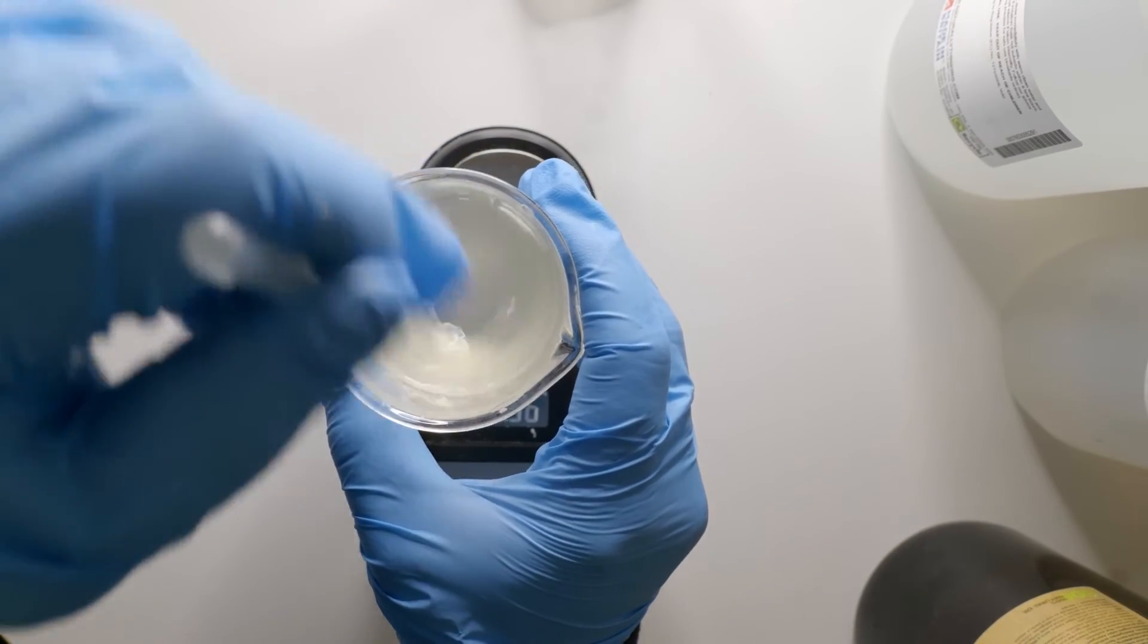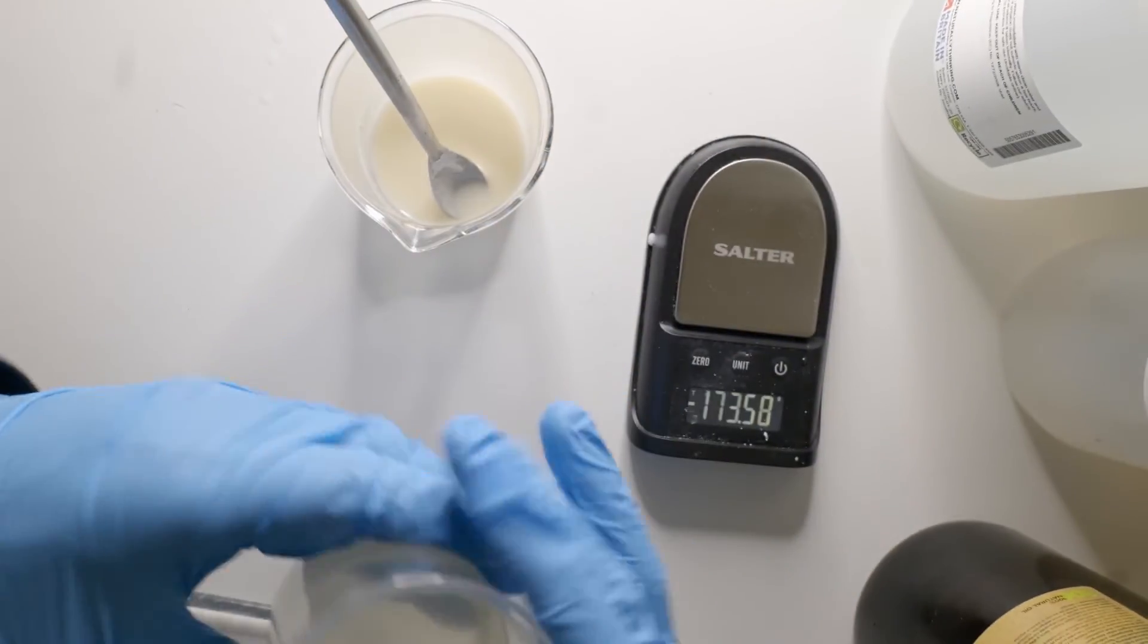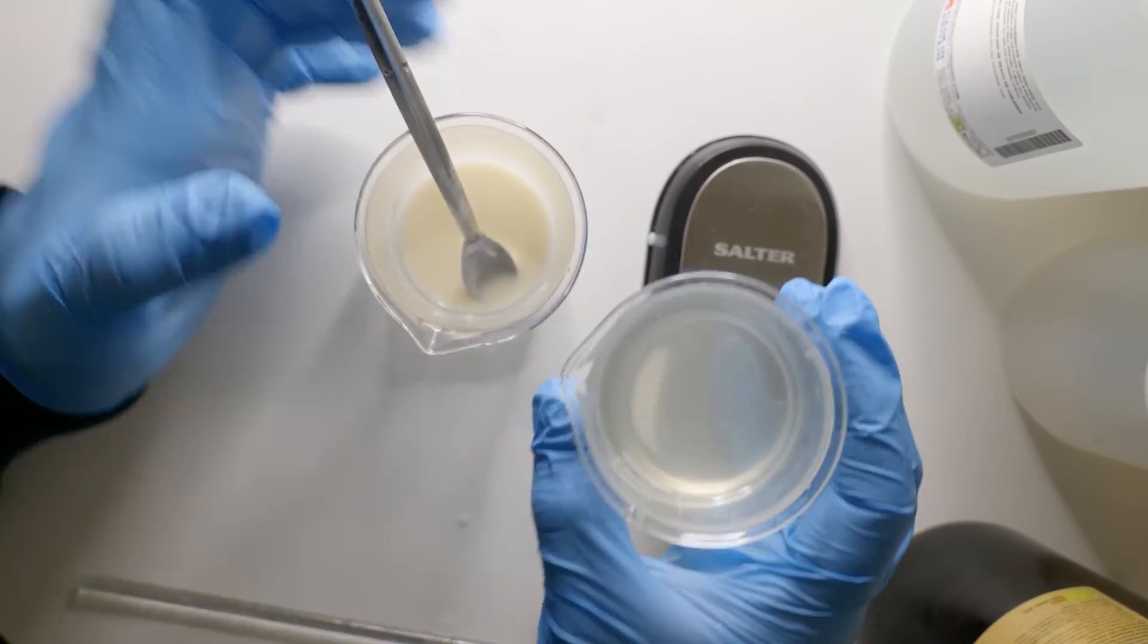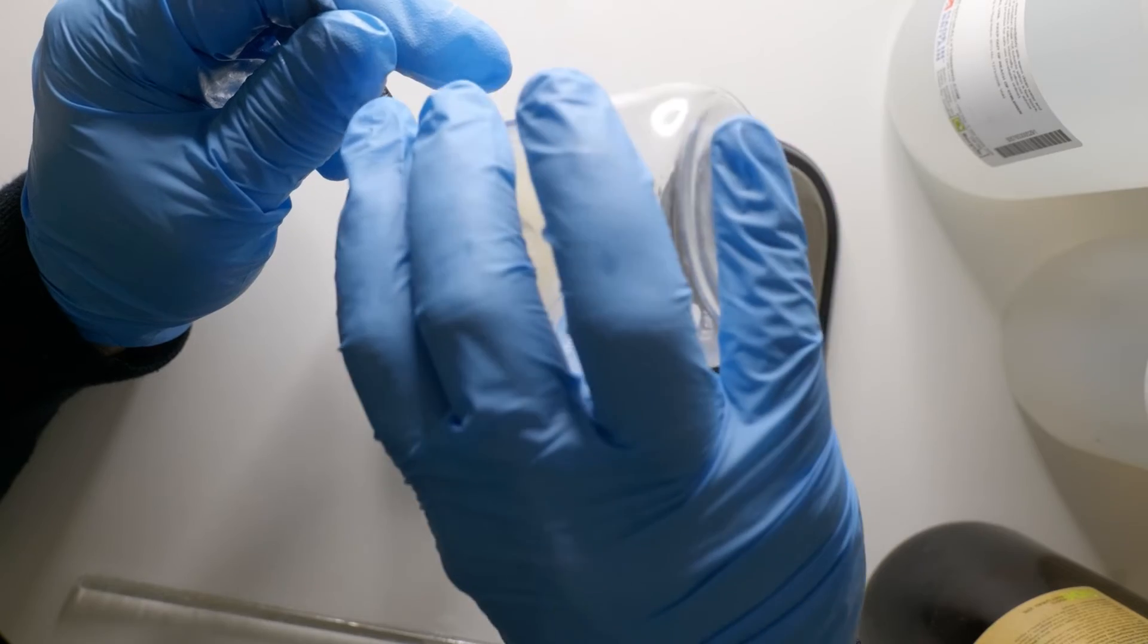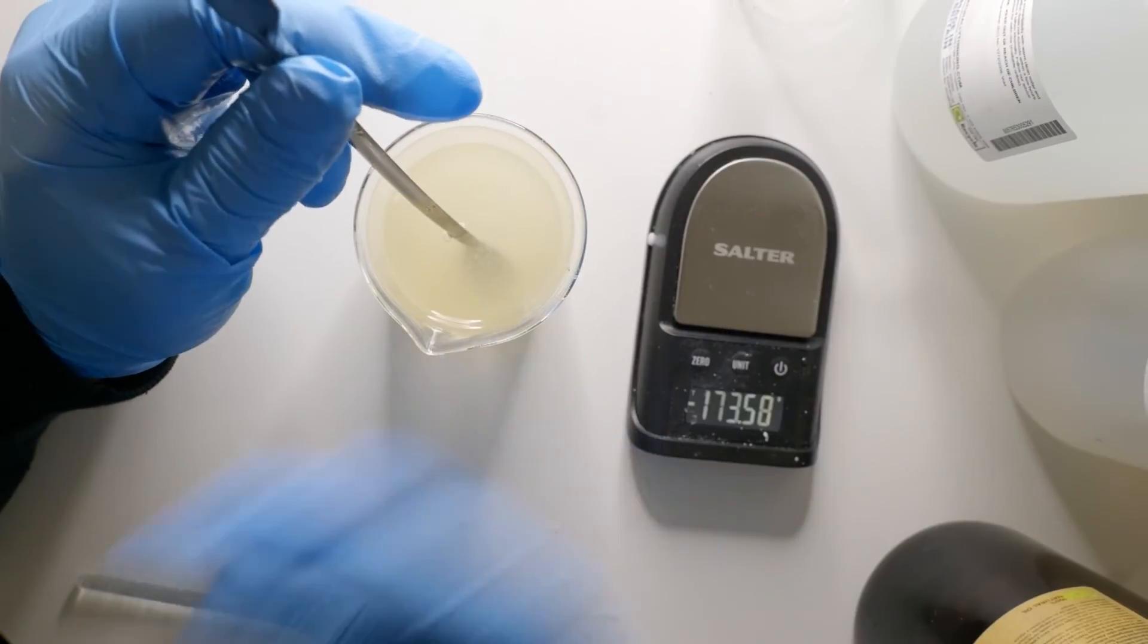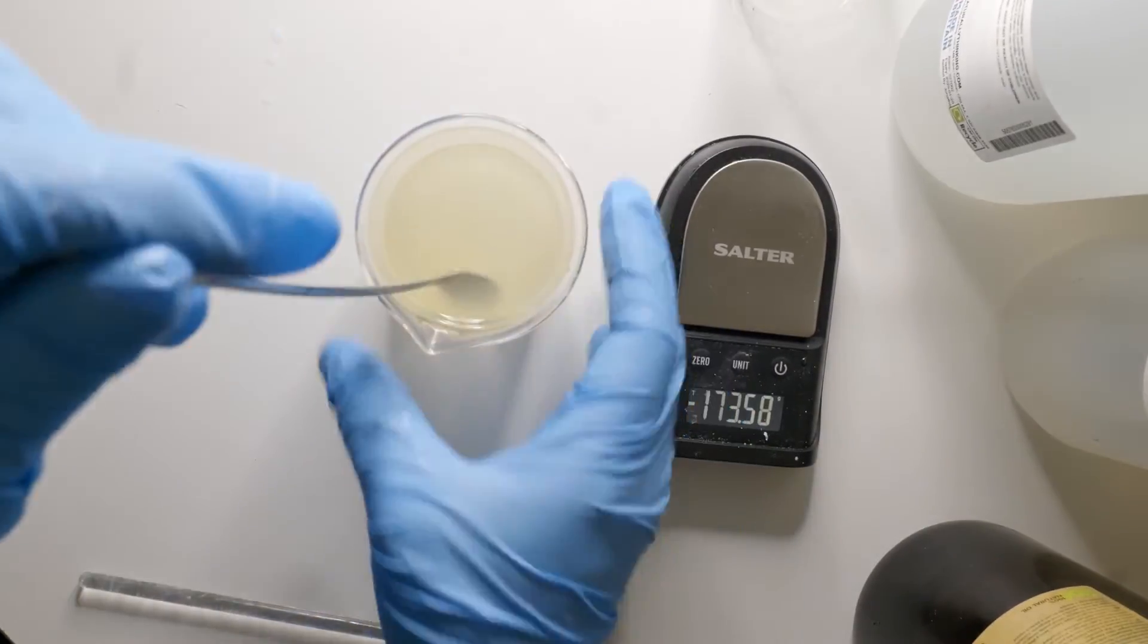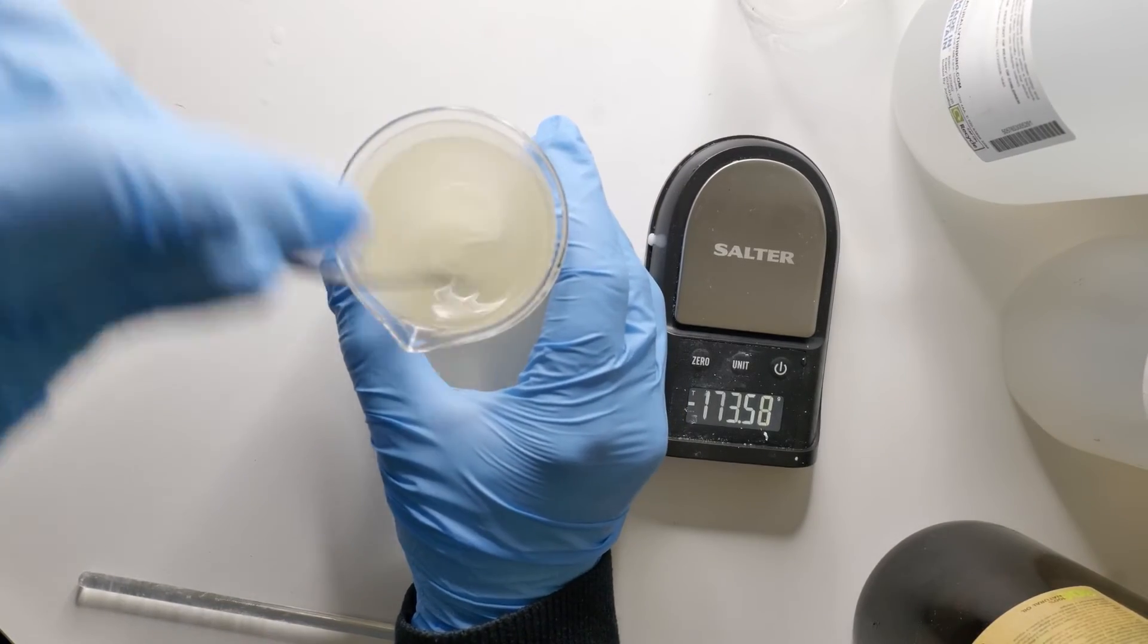I'm going to add 1 gram of Preservative Eco. This is a natural preservative. Let's mix this all up. So let's combine it all together. This is where the hyaluronic acid is in. I'm just going to pour the water inside. The reason I did it this way is once the hyaluronic acid becomes gel, it's going to be a little bit difficult for us to add the ingredients. So let's just mix it all together.